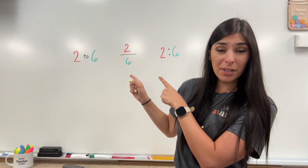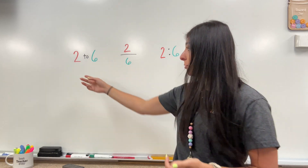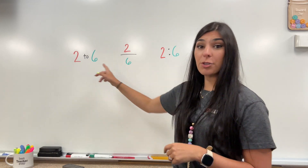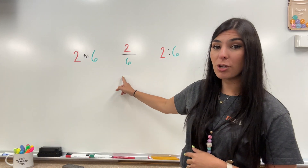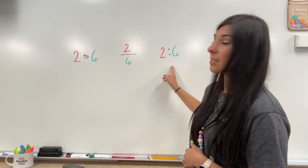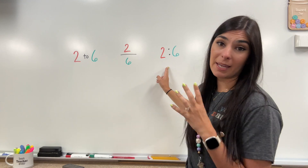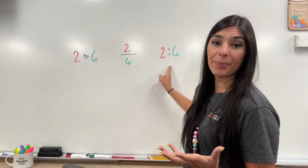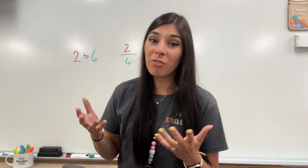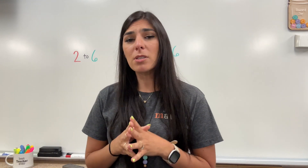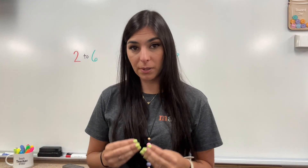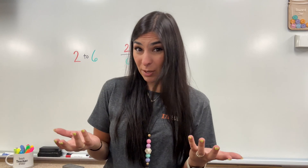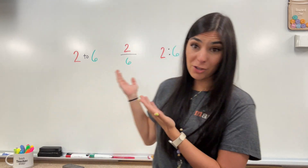Here's what it looks like when you write them up three different ways. You can use your words, you can show it in a fraction, or you can show it by using the colon and making that type of ratio. Now, when we write a ratio, it's important to write it in simplest form, just like we do with fractions.